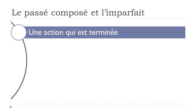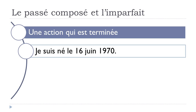Une action qui est terminée — a completed action. For example, if you want to introduce your birth date: 'Je suis né le 16 juin 1970.' It was an action in a way, but it's finished. That's the reason why you use the verb naître at the passé composé: je suis né le 16 juin 1970.